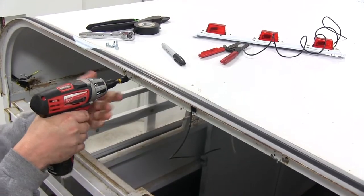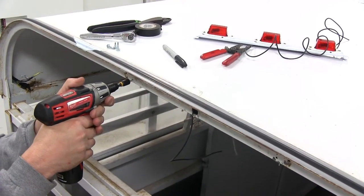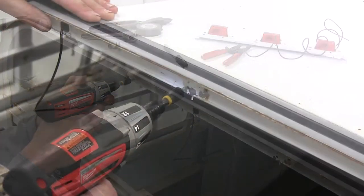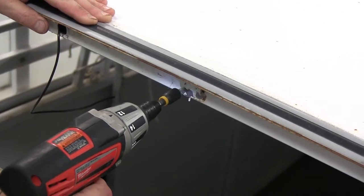Now we're just going to be using some self-tapping screws to secure the light bar to the rear of the trailer, so we'll use the screws to pre-drill the holes here.